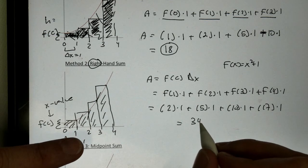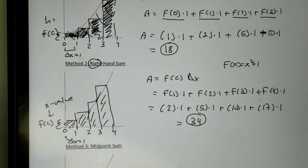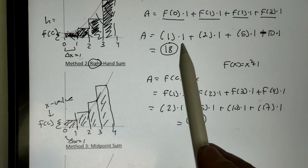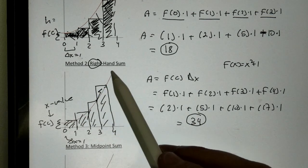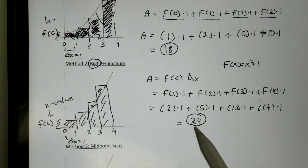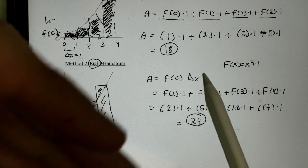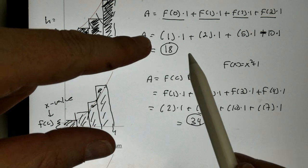And I can add those up if I wanted to. 17 plus 17 is 34. So, take a look. My underestimate is 18. But my overestimate, clearly this is going to be an overestimate for us, is 34. So, we know the actual area has to be between 18 and 34.